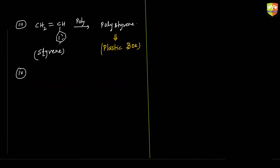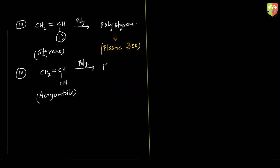Another example: we remove the benzene ring and attach CN — cyanide — here. This molecule we call acrylonitrile. On polymerization, this gives polyacrylonitrile. All these are homopolymers. We also call polyacrylonitrile as Orlon — the general name is Orlon.